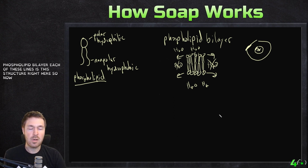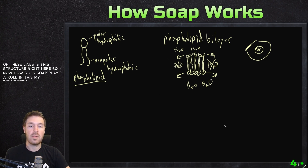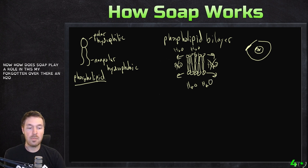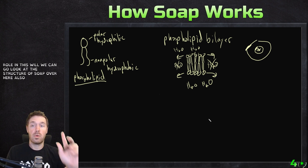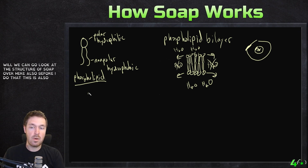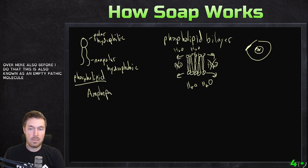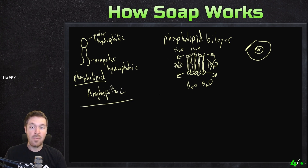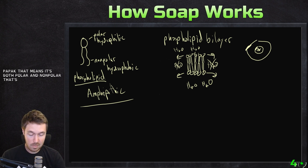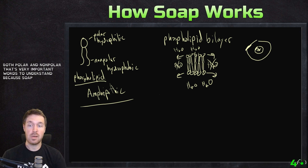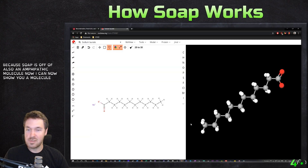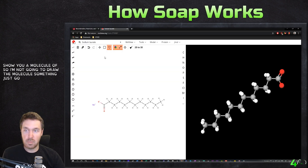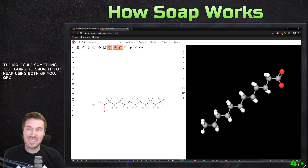So now, how does soap play a role in this? We can go look at the structure of soap. Also, before I do that, this is also known as an amphipathic molecule. Amphipathic means it's both polar and nonpolar. That's a very important word to understand, because soap is also an amphipathic molecule. Now I can show you a molecule of soap — I'm going to show it here using moleview.org. This is sodium laurate, which is what we commonly find in soap.